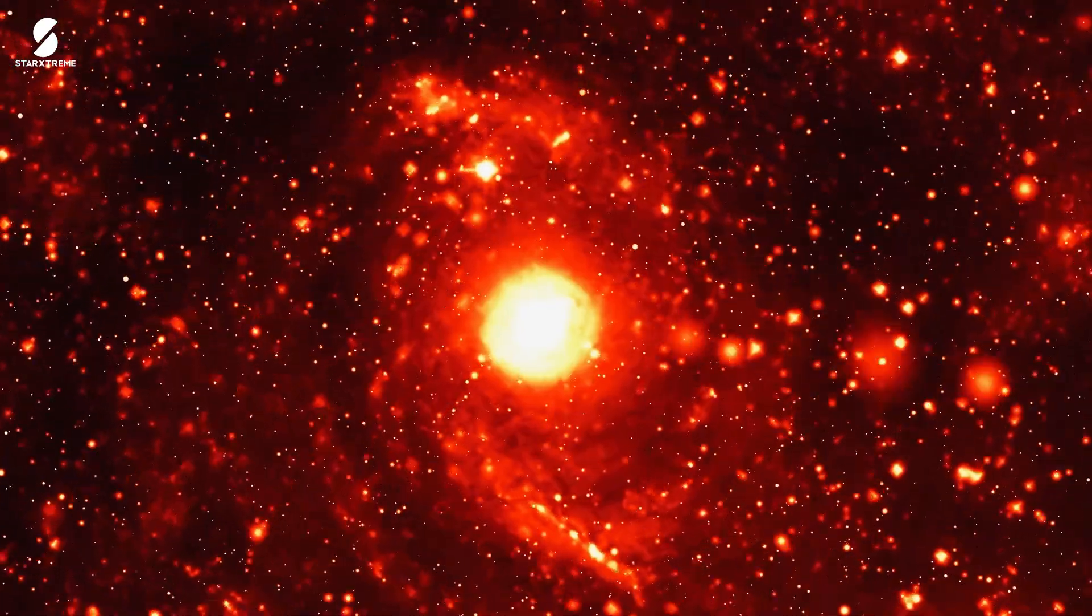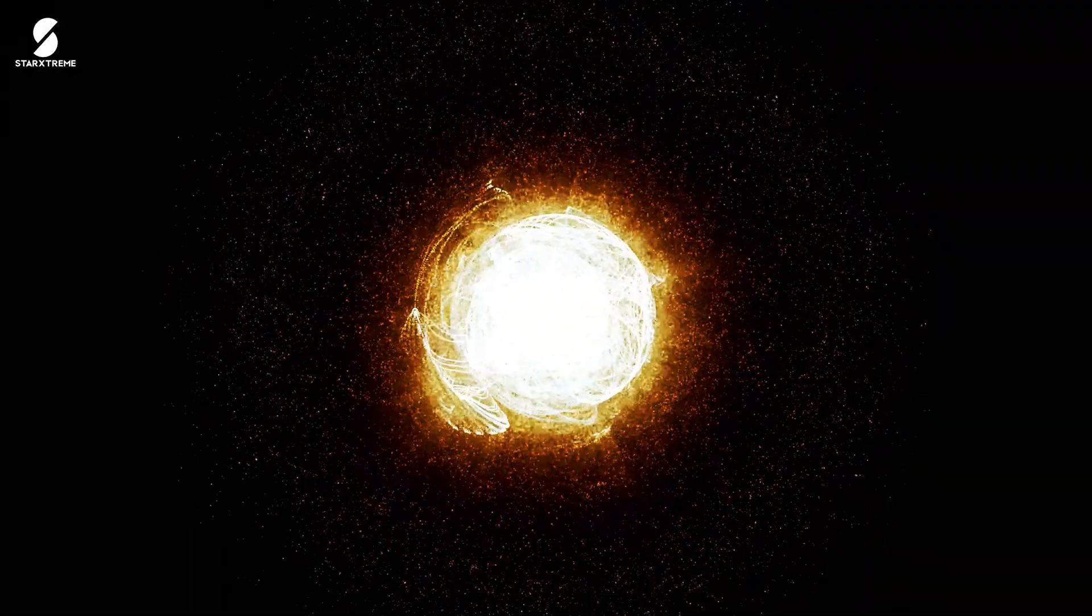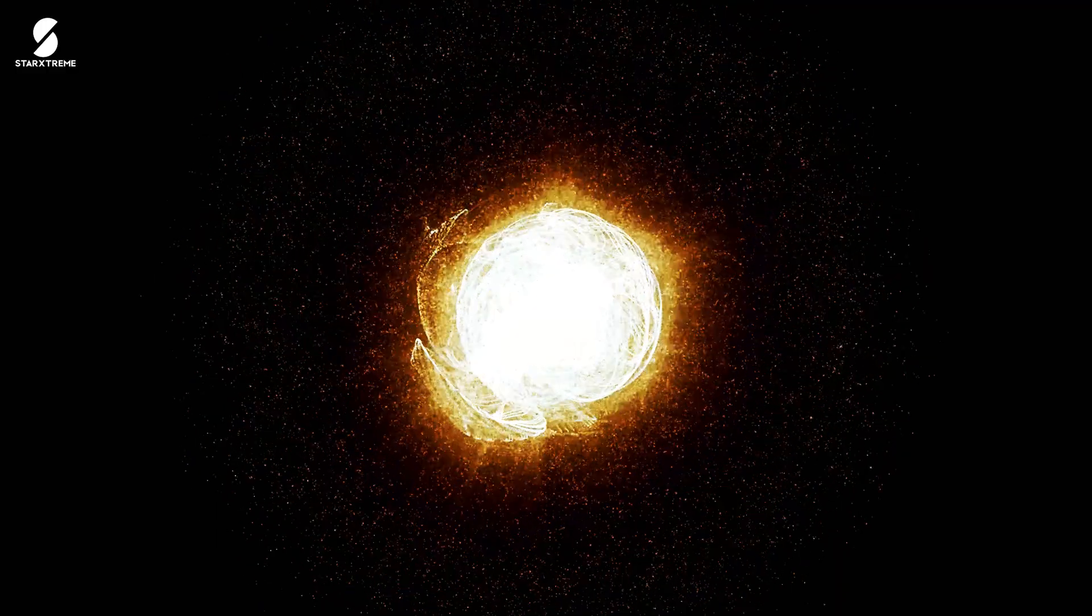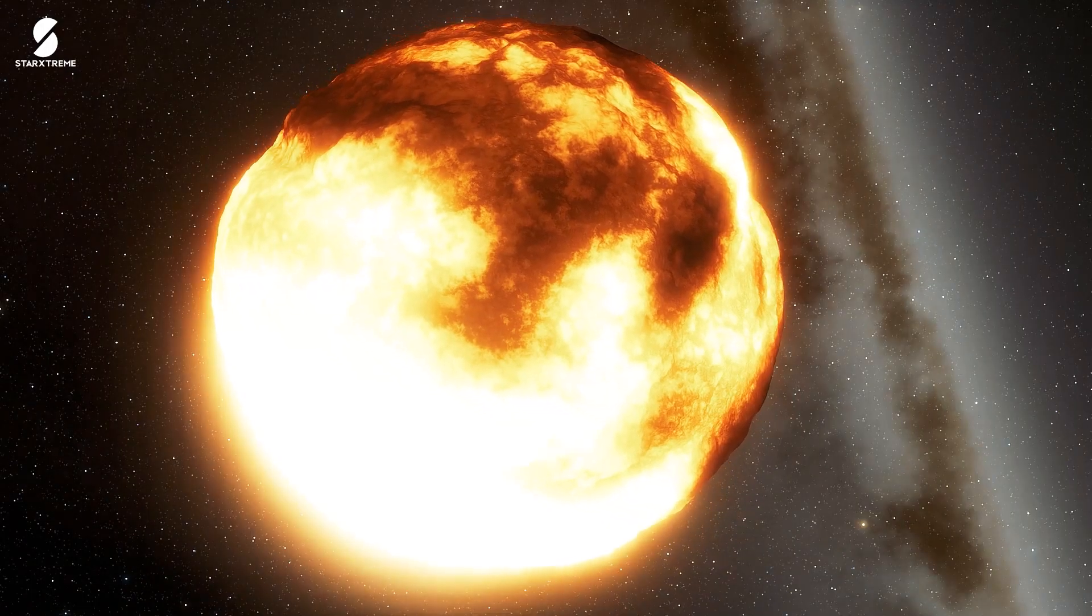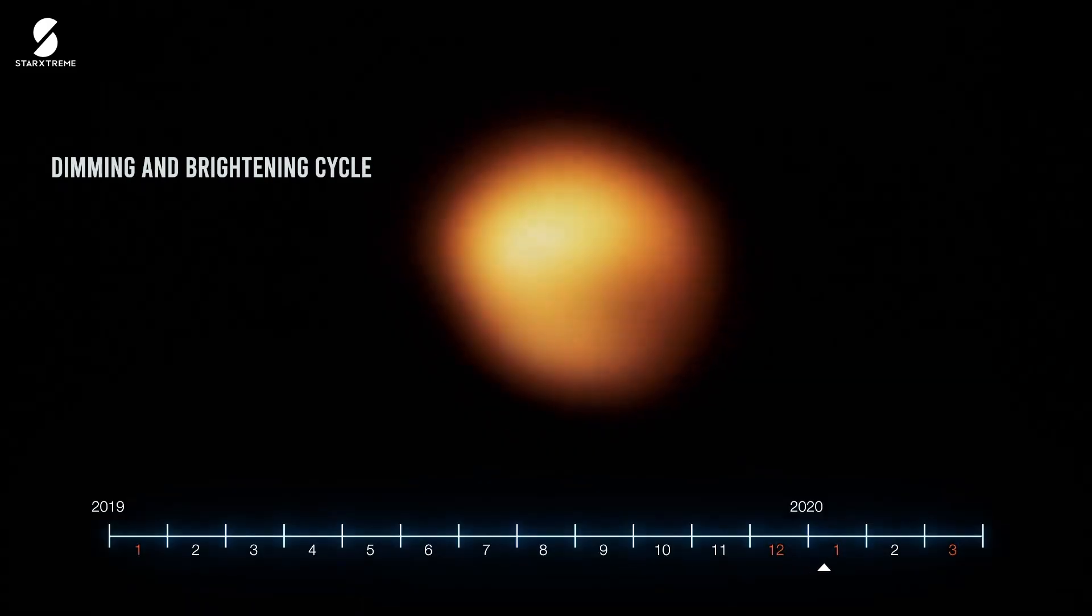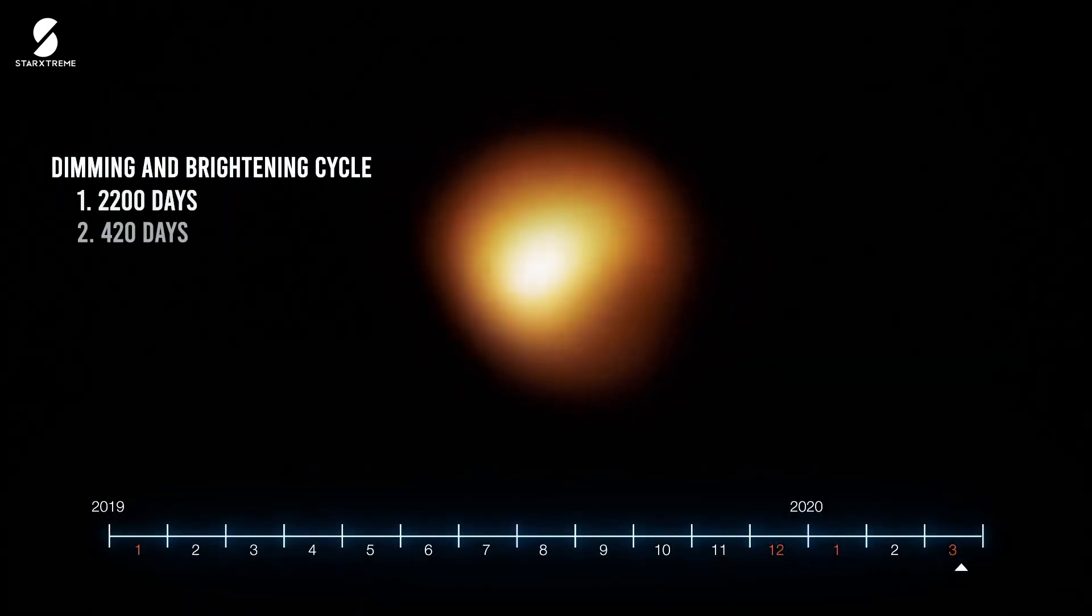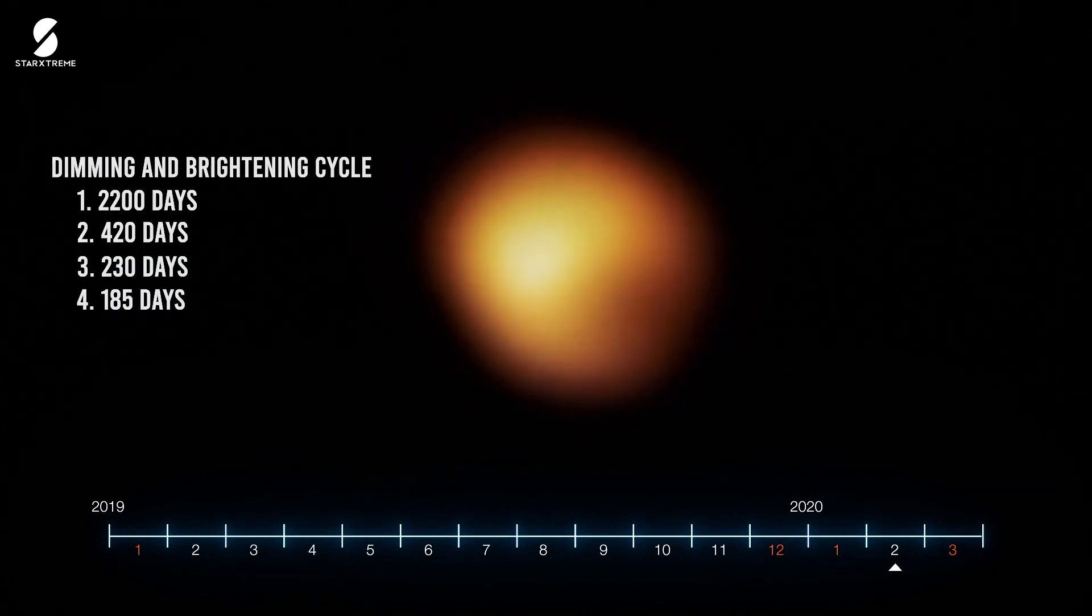If it's the star's pulsations—you see Betelgeuse is unstable, breathing in and out regularly, with overlapping overtones. Following its brightness over the past century, astronomers have noted changes over periods of 2,200 days, 420 days, 230 days, and 185 days.